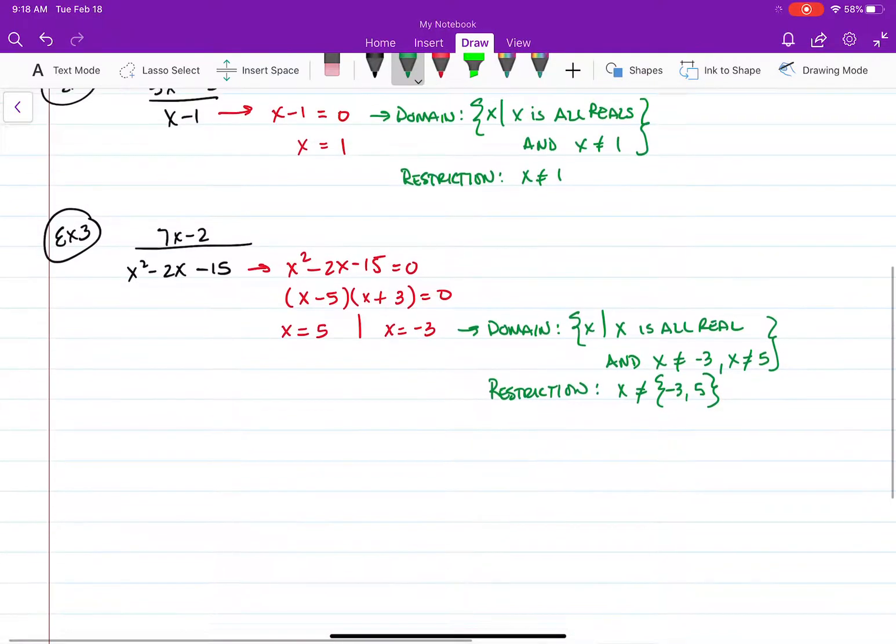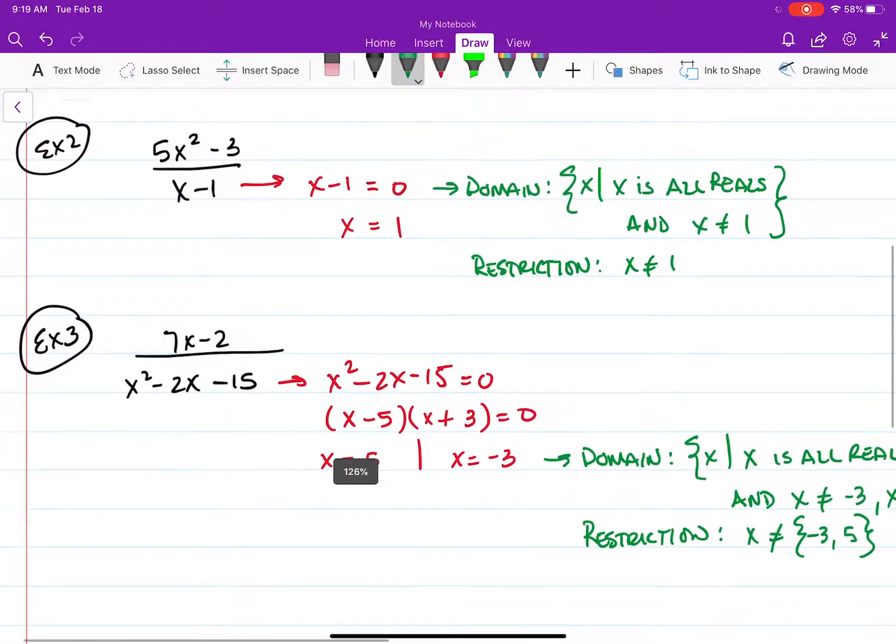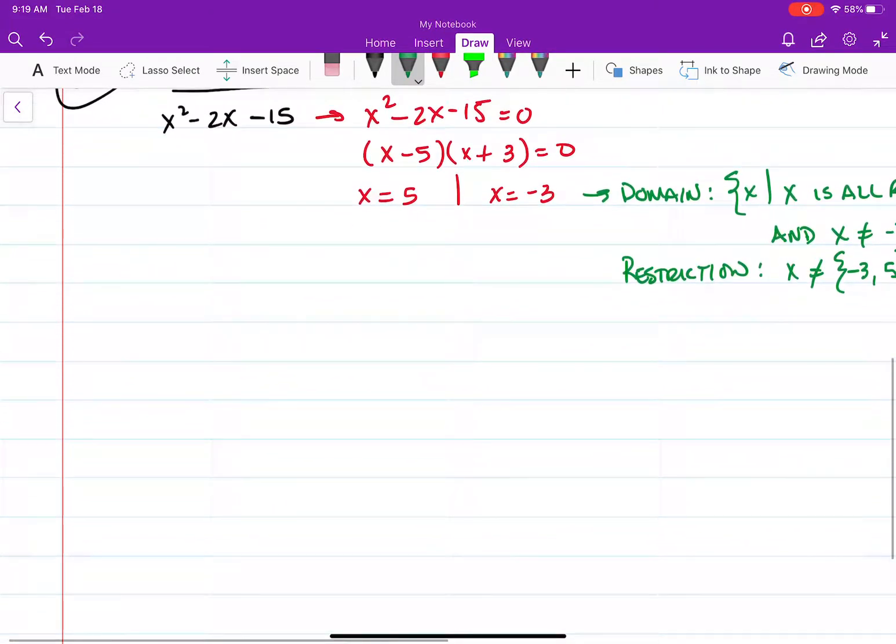Okay, so if we notice that every denominator, in other words if the denominator has an x value, chances are there will be a restriction, the domain will get limited. And if there's no x value in the denominator, then there will not be any restrictions and the domain will be all reals. Okay, so let's go to simplifying.